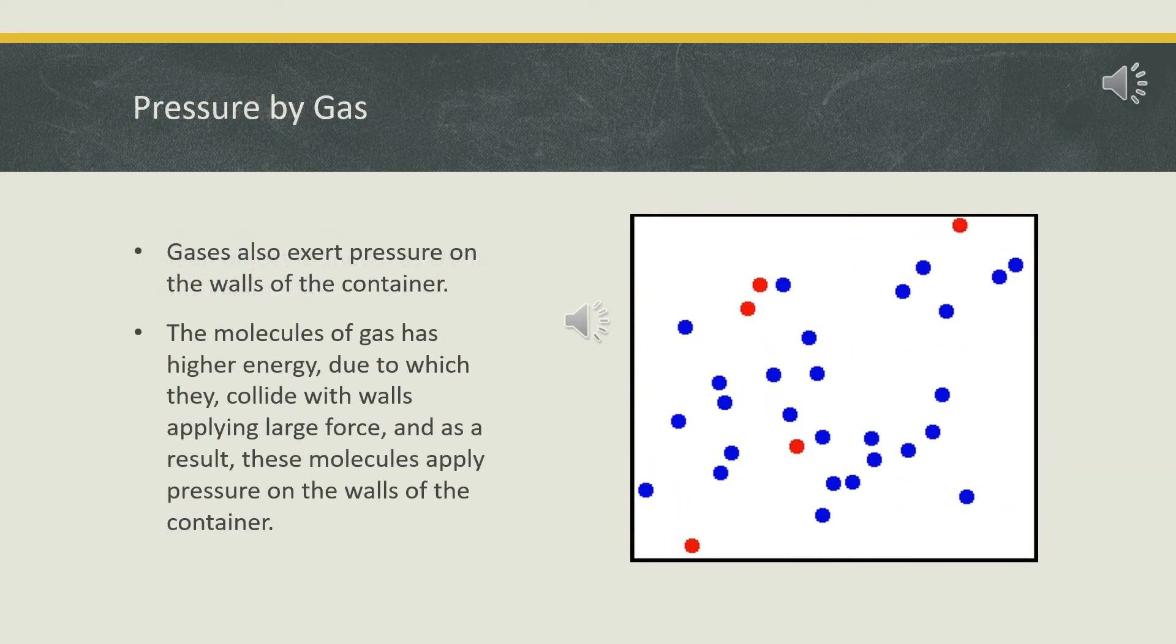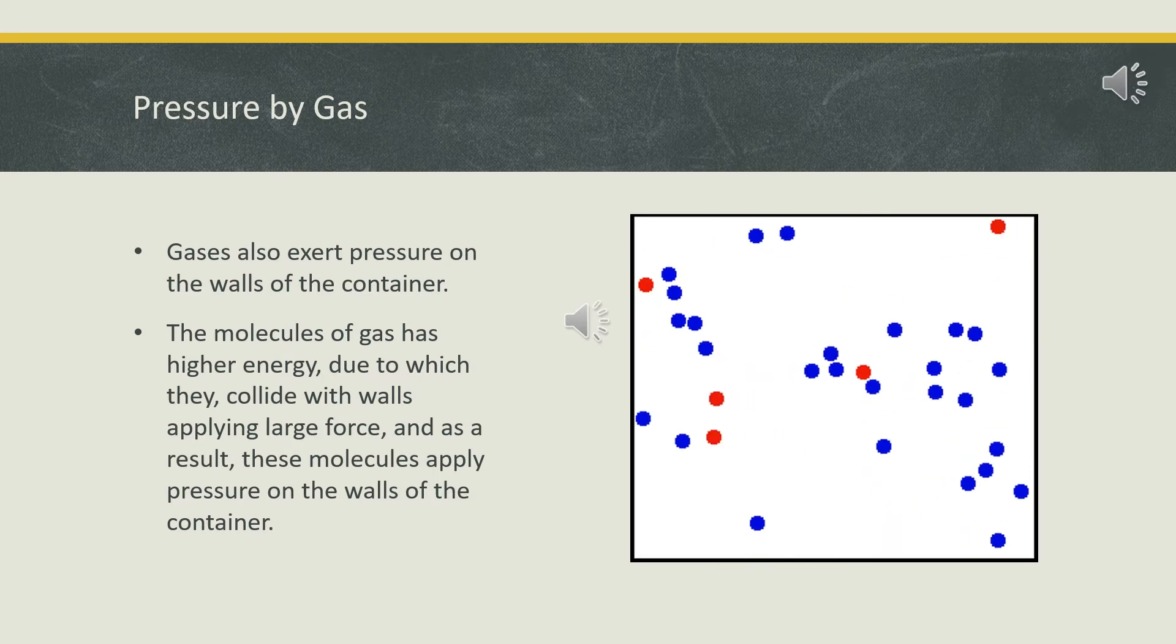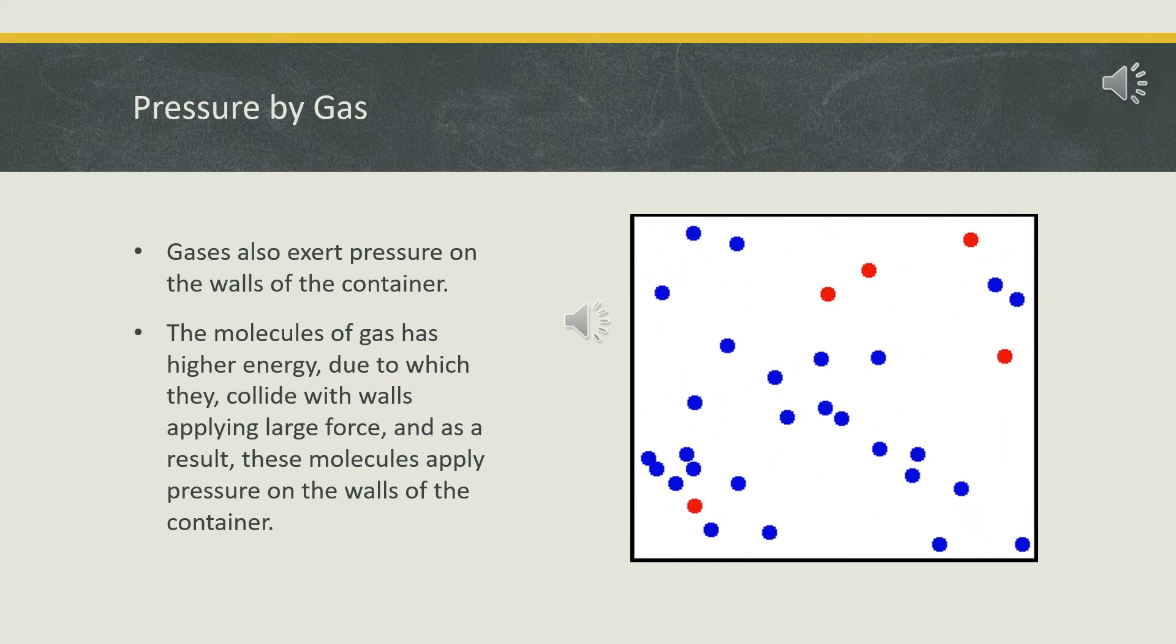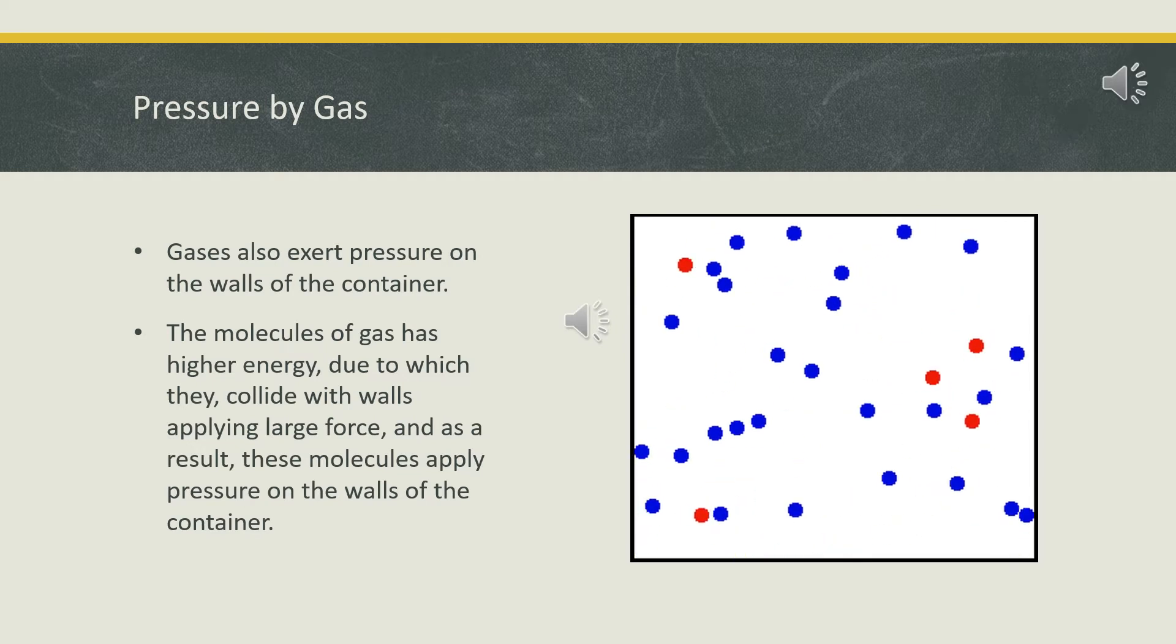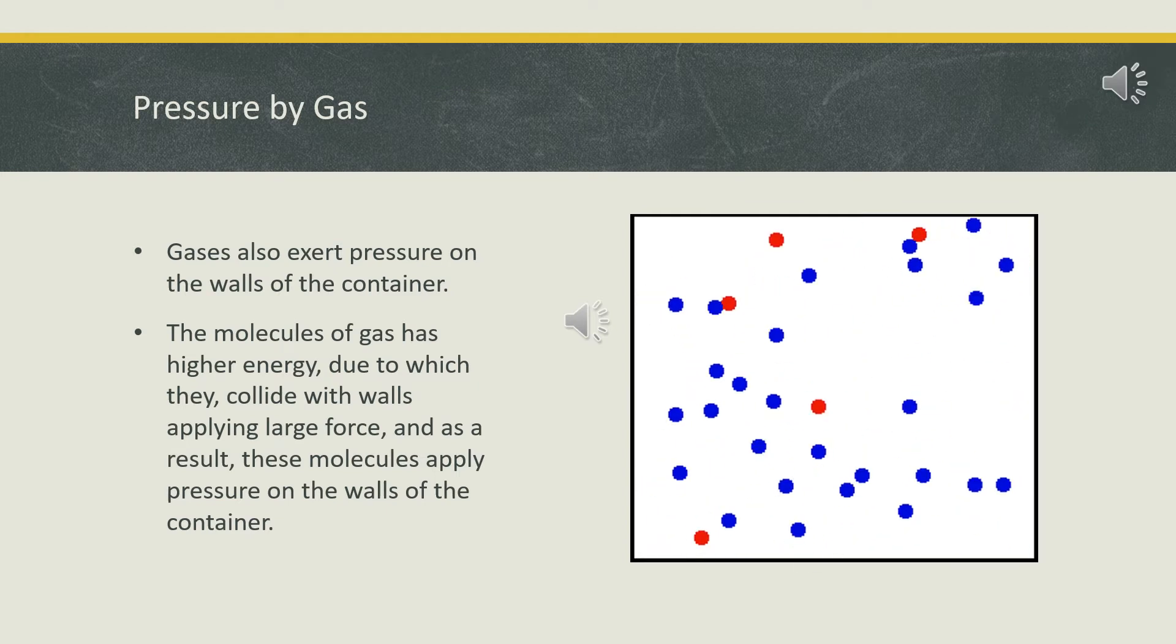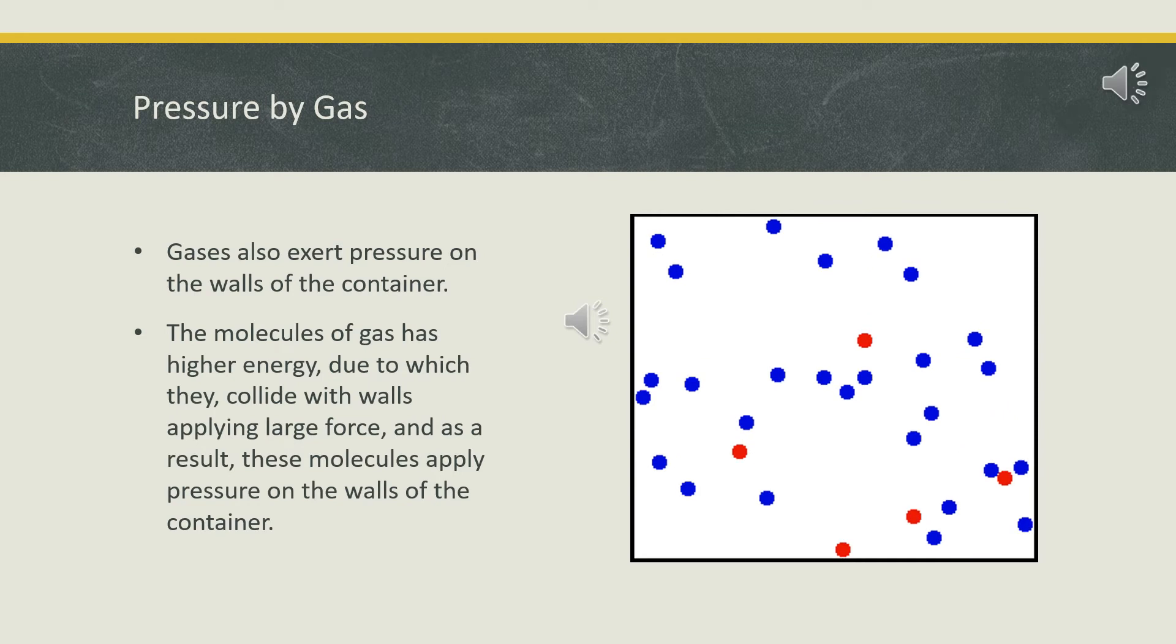We have already learned that liquids exert pressure. In the same way, gases also exert pressure. That is why a balloon expands when we blow air in it. But what happens if we blow too much air in the balloon? It bursts. This happens because the material of the balloon is not able to withstand or hold the increasing pressure of the air.